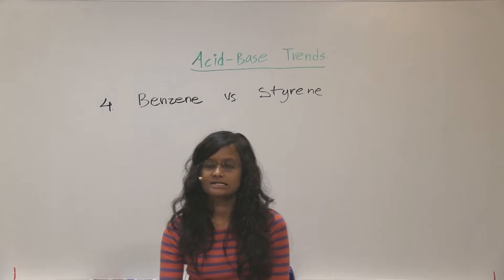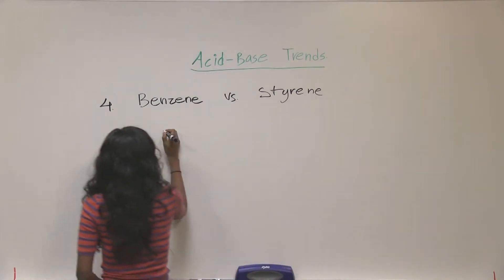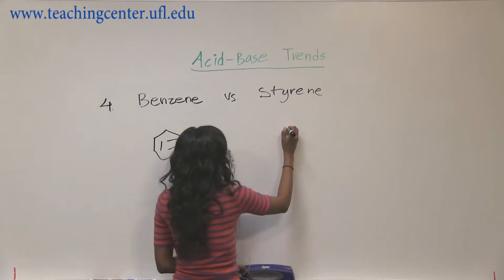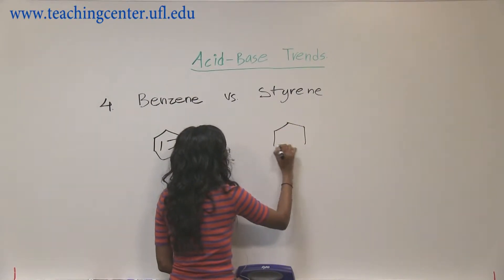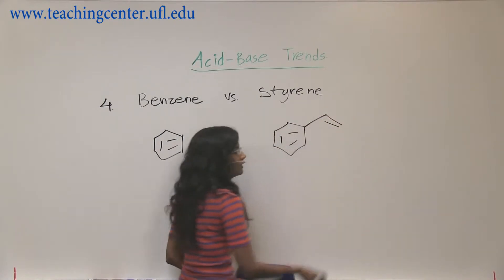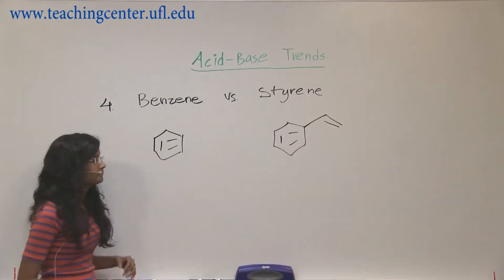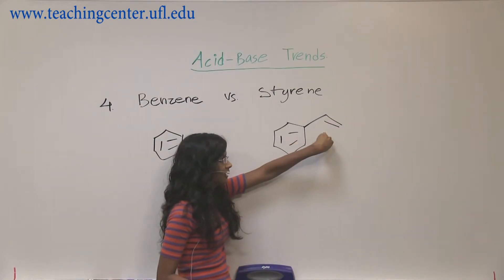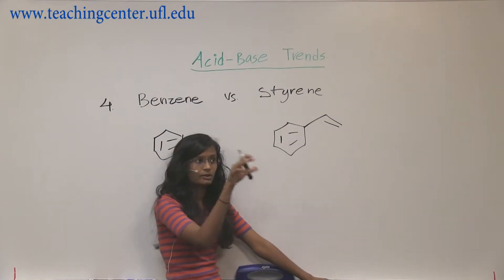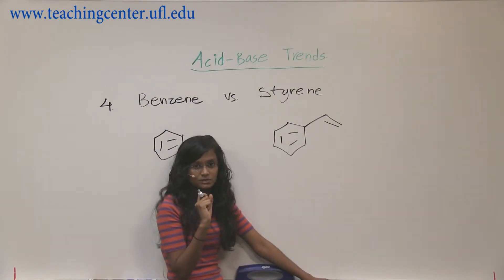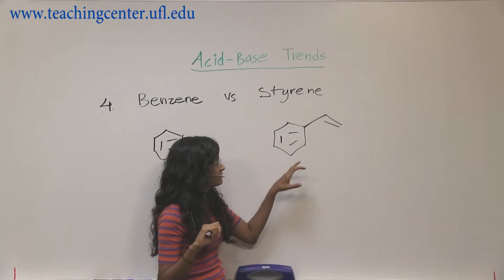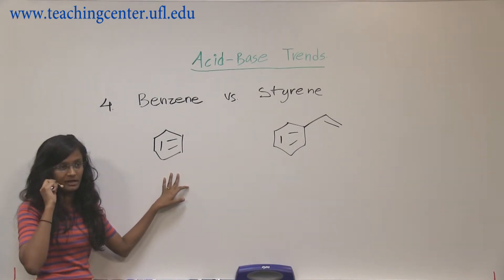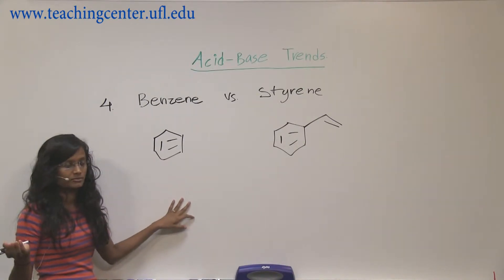All right, so benzene versus styrene. They both are aromatic star structures. Now styrene has this alkene — alkene usually acts as a nucleophile, so it's going to go ahead and grab one H. We call it a base-like structure. So if styrene is acting as a base, benzene has to act as a base as well for a correct comparison.